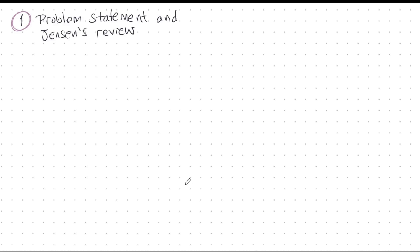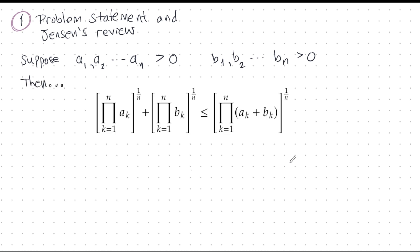Today I've got a fantastic application of Jensen's inequality for you. Suppose I have these n positive numbers, a₁ to aₙ, and I've got another collection of positive numbers, b₁ to bₙ. Then, we have this fantastic and amazing looking inequality.